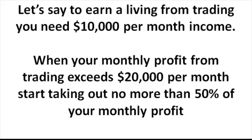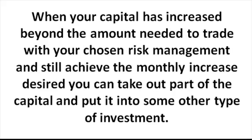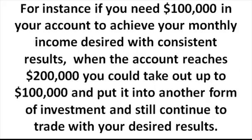When your monthly profit from trading exceeds $20,000 per month, you can start taking out no more than 50% of your monthly profit. Your trading capital will actually continue to increase each month if your results are consistently positive. When your trading capital has increased beyond the amount needed to trade with your chosen risk management and still achieve the monthly increase desired, you can take out part of the capital. For instance, if you need $100,000 in your account to achieve your monthly income desired, when the account reaches $200,000, you could take out up to $100,000 and put it into another form of investment. If this is not part of your plan for your trading business, what is it you're planning? If you're actually planning to consistently increase your capital, you definitely want to be thinking about doing this.